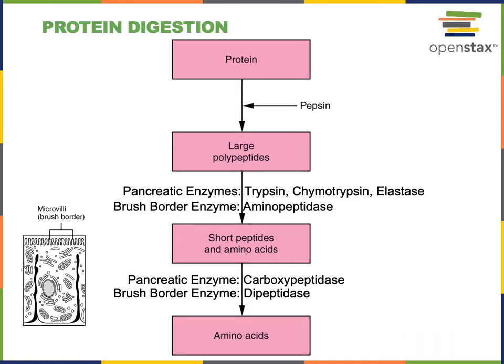Protein digestion begins within the stomach, where the low pH of gastric juice will denature proteins. Then pepsin is the first protease that catalyzes hydrolysis of peptide bonds producing fragments that are still relatively large polypeptides. Then within the duodenum, the pancreatic enzymes trypsin, chymotrypsin, and elastase catalyze hydrolysis of peptide bonds within polypeptides producing shorter peptides.